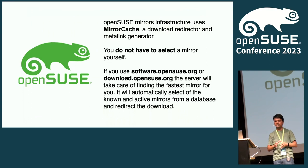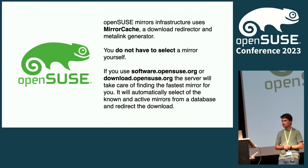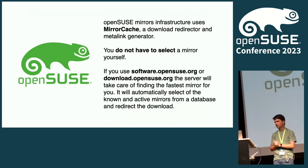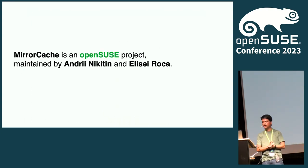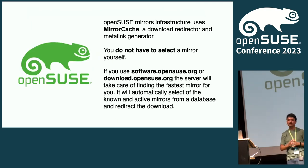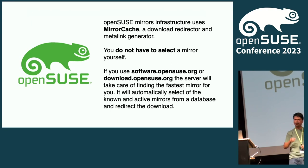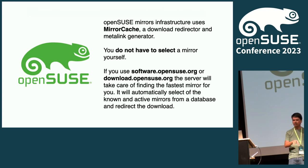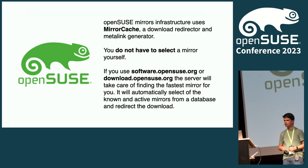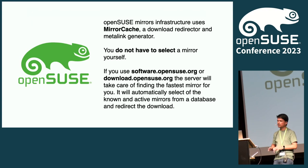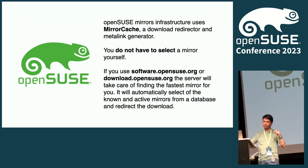I'll give you a quick brief about the mirror infrastructure and how we built it. OpenSUSE uses MirrorCache for its mirroring infrastructure — it's a project maintained by Andre Nikitin and Elisei Rocha. MirrorCache means that any person installing OpenSUSE doesn't have to configure anything to get content updates from a server closer to home. When a request goes to software.opensuse.org or download.opensuse.org, it's automatically redirected to the closest registered server.